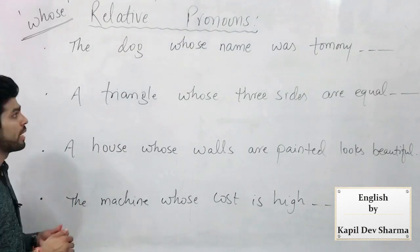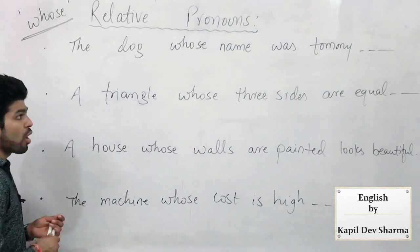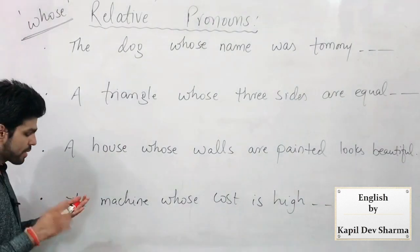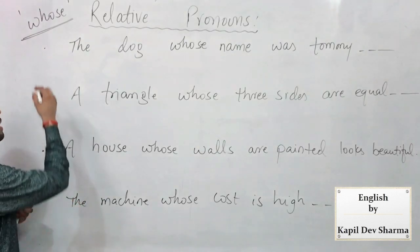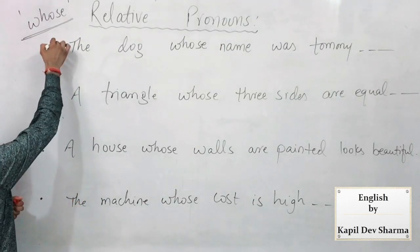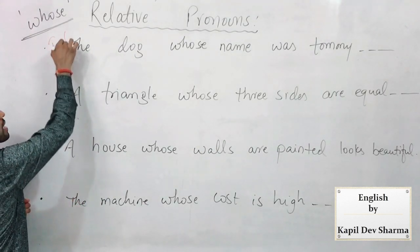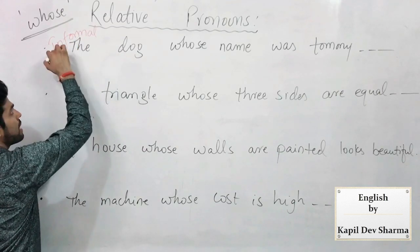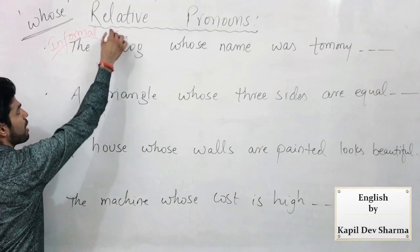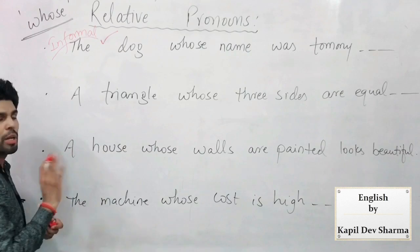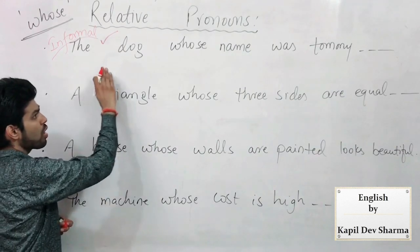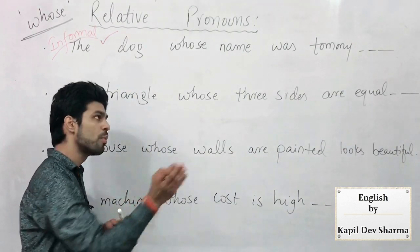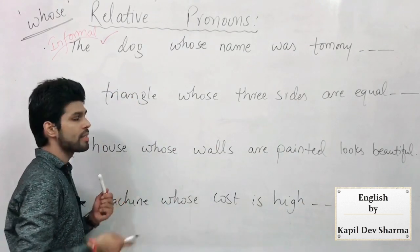'The dog whose name was Tommy' — I want to say again: this sentence has no error in today's modern English, or in informal style. I repeat — in today's language this statement has no error, no improvement needed. 'The dog whose name' — jiska naam Tommy tha — voh yahaan rehta hai, etc.